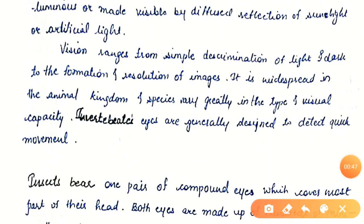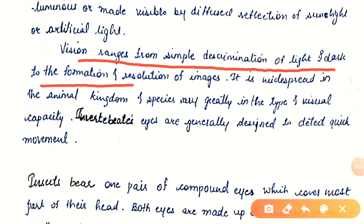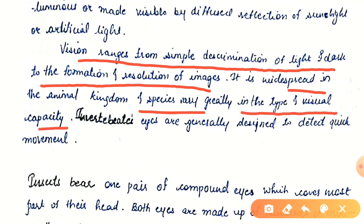Vision ranges from simple discrimination of light and dark to the formation and resolution of images. Some organisms can only discriminate light and darkness, but in animals like humans there is formation as well as resolution of images. This is widespread in the animal kingdom, and species vary greatly in the type and visual capacity.